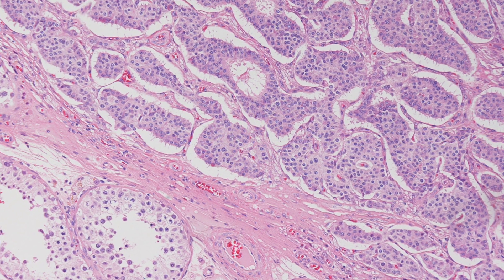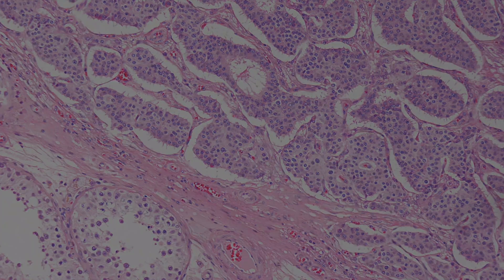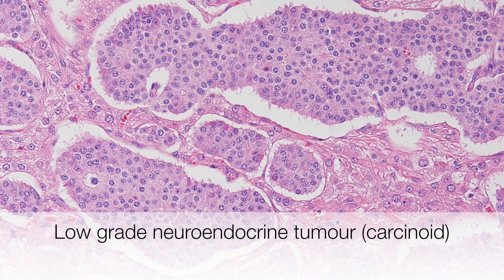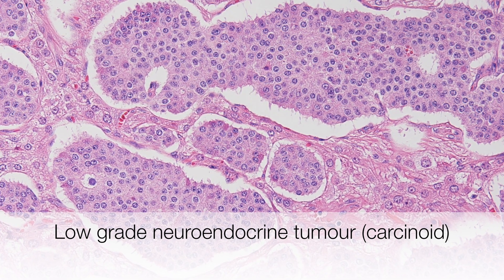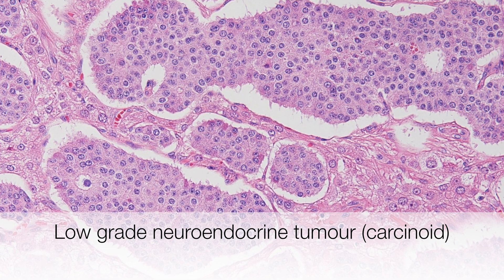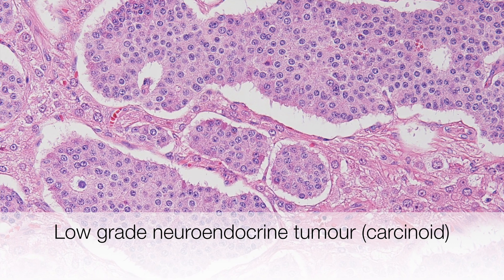This is a testicular mass from a male of 40, who had normal AFP and normal beta-HCG. This is a low grade neuroendocrine tumour, also known as carcinoid.